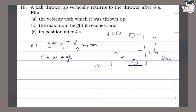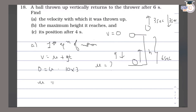If the ball is going up, gravity acts downward, so g is negative. The ball takes 3 seconds to go up and 3 seconds to come down, making a total time of 6 seconds. So the time to reach the top is 3 seconds. Applying v = u + gt: 0 = u + (-10)(3), which gives u = 30 meters per second.